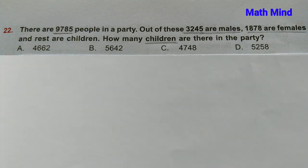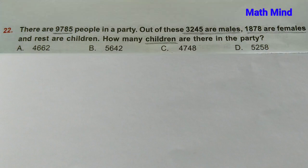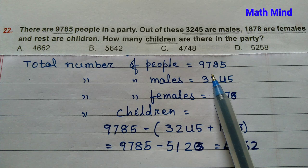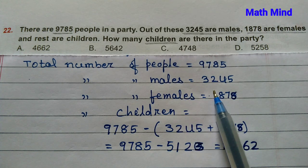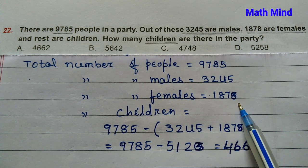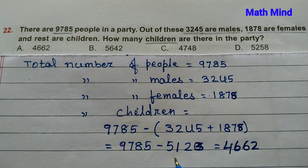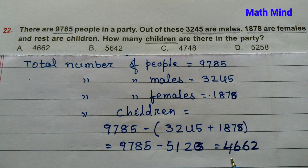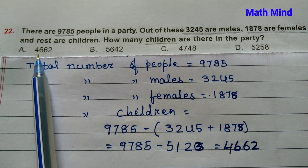Question number 22: There are 9785 people in a party. Out of these, 3245 are males and 1878 are females, and the rest are children. How many children are there? Total people: 9785. Males: 3245, females: 1878. Adding males and females: 5123. Subtracting from 9785 gives 4662 children. Option A is correct: 4662.